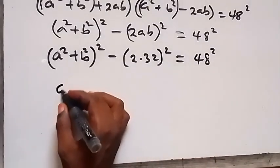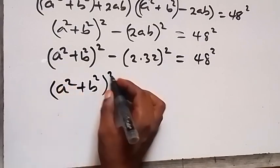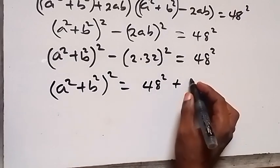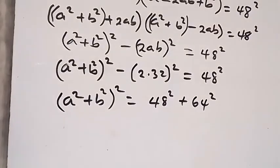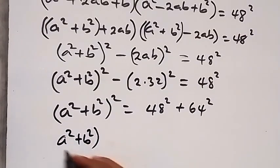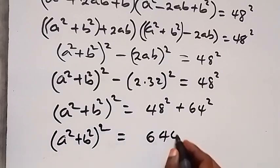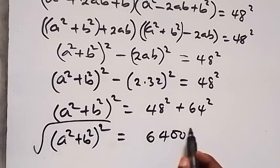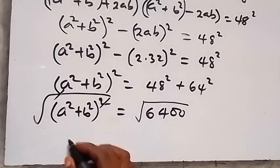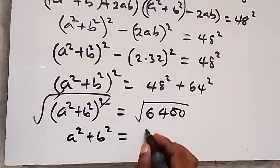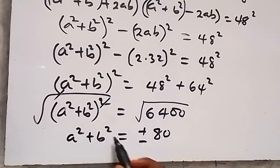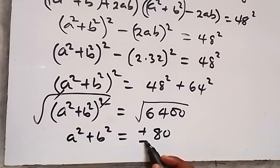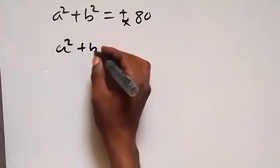Rearranging gives (a squared plus b squared) squared equals 48 squared plus 2 times 32 squared, which equals 6400. Taking the square root of both sides gives a squared plus b squared equals plus or minus 80. Since a squared plus b squared cannot be negative, we take the positive value: a squared plus b squared equals 80.